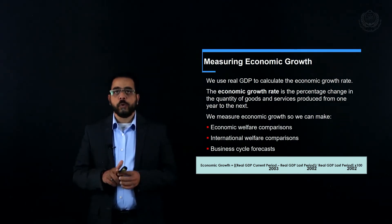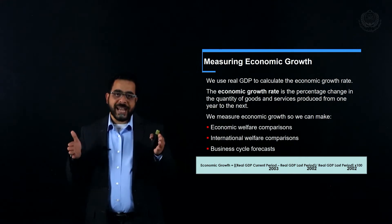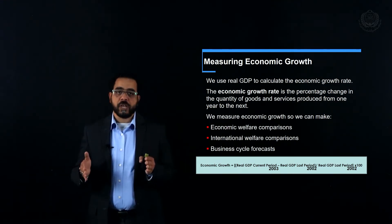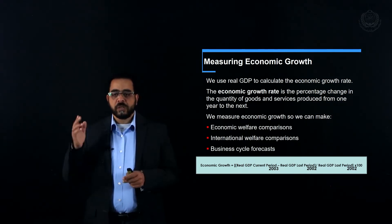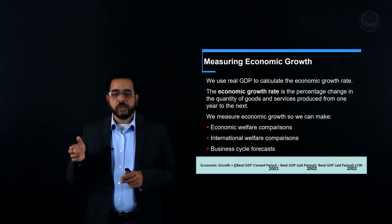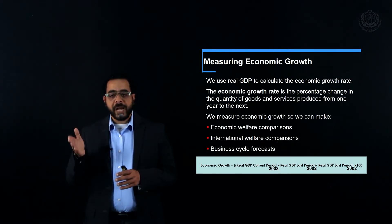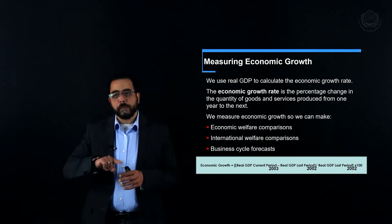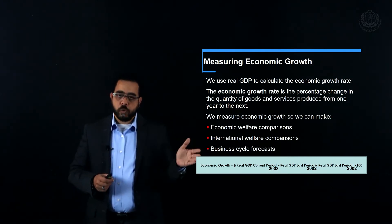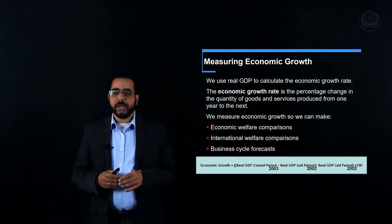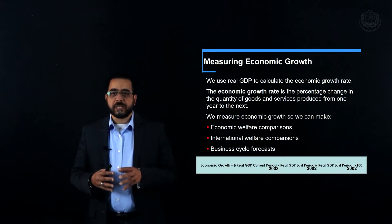An important remark: we use real GDP, not nominal GDP, because at this parameter we don't care about the change in prices — we care about the change in quantities. So economic growth equals real GDP in the current period (say 2003) minus real GDP in the last period (2002), over real GDP in 2002, times 100.